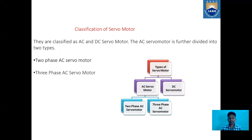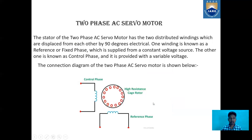With the help of this diagram we can see that the types of servomotor are AC servomotor and DC servomotor. The AC servomotor is divided into two types: two-phase AC servomotor and three-phase AC servomotor.